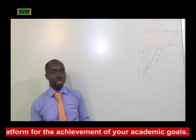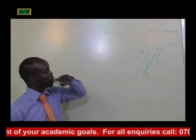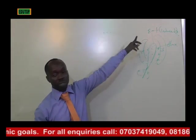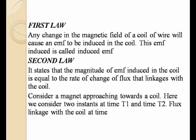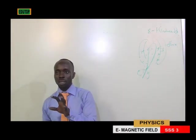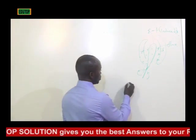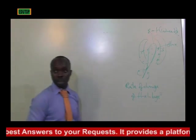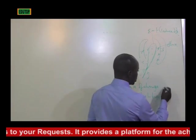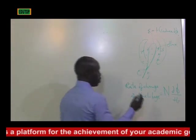It's just two laws. The first: if you change the magnetic field and try to break the flux, EMF is induced. The more the speed of the coil, the more EMF. Let's consider a magnet approaching towards the coil. The formula for the rate of change of flux linkage is EMF = N dΦ/dt.